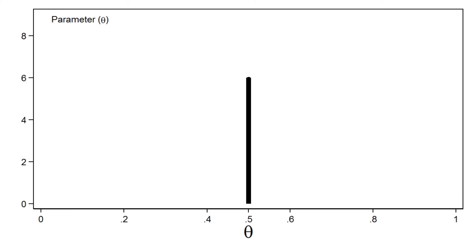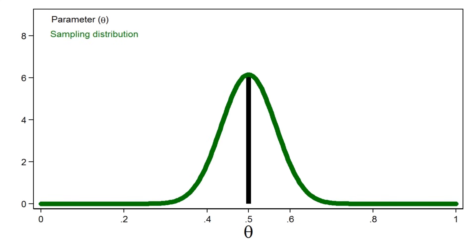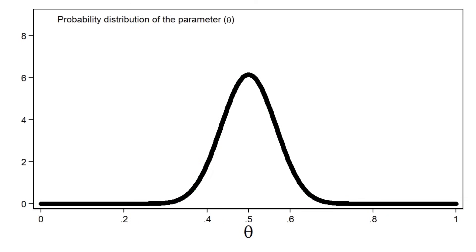Many of us were trained using a frequentist approach to statistics, where parameters are treated as fixed but unknown quantities. We can estimate these parameters using samples from a population, but different samples give us different estimates. The distribution of these different estimates is called the sampling distribution, and it quantifies the uncertainty of our estimate, but the parameter itself is still considered fixed.